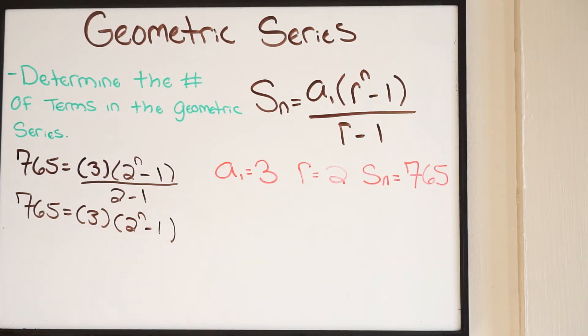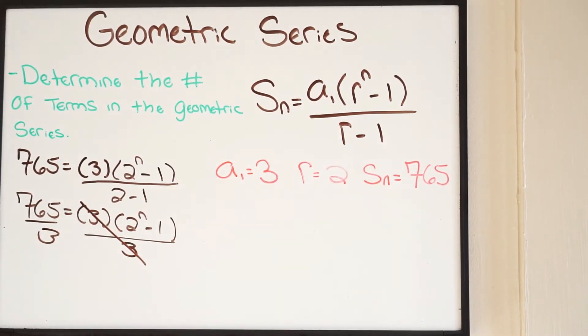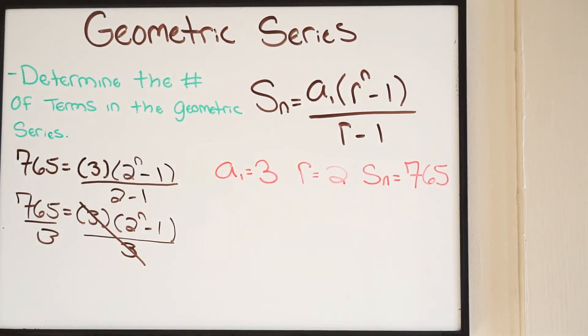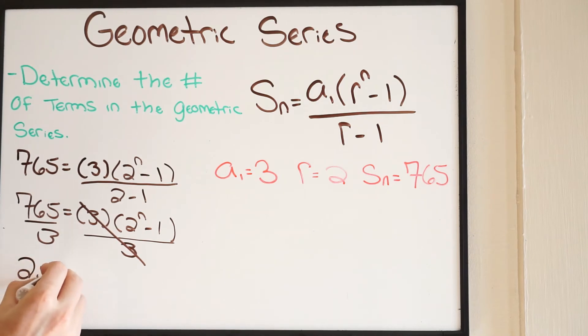At this point, we want to go ahead and divide both sides by 3. So that will cancel. Let's go ahead and plug this into our calculator. So we get 765 divided by 3, and we get 255.